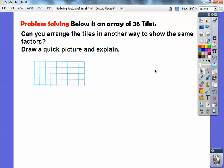Alright, so below is an array of 36 tiles, okay? So, here's 36 tiles. 1, 2, 3, 4 by 9. 4 by 9 gets me 36. So, can you arrange the tiles in another way to show the same factors? Okay, and draw a quick picture and explain. Okay, so it says to show the same factors. I know there's other things. I know you're probably thinking 6 times 6, but those aren't the same factors as 4 and 9. Here I'm using 4 and 9 as factors of 36.